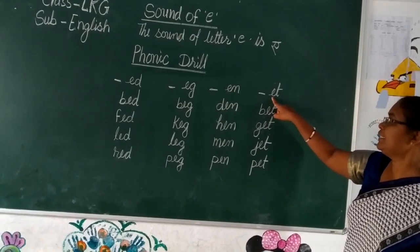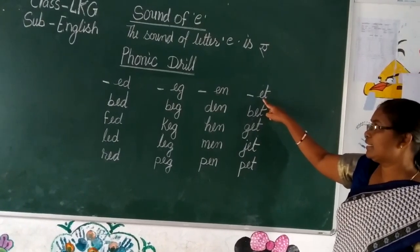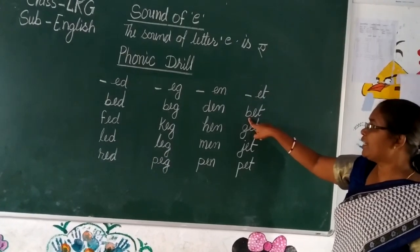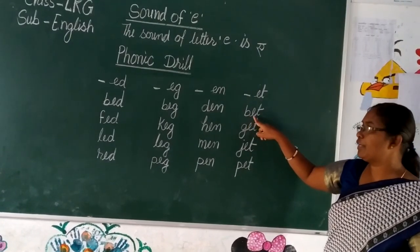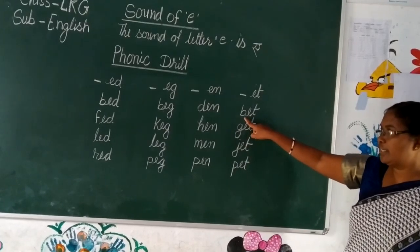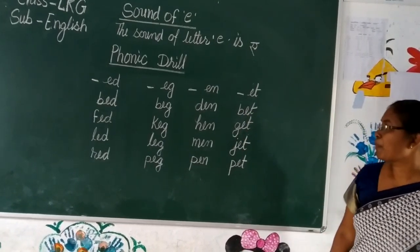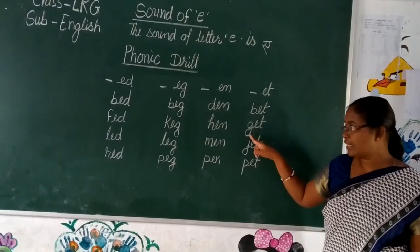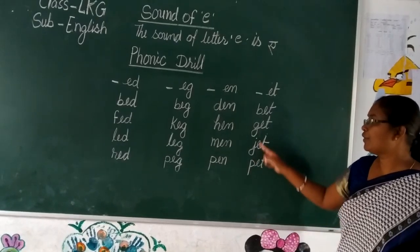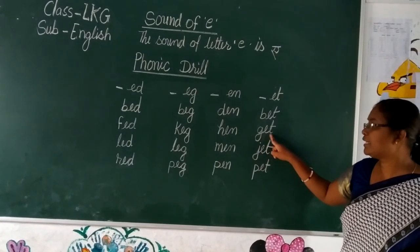Letters ET. Phonic sound is 'yet'. We added letter B before ET — the phonics sound is 'b', 'et', 'bet'. We added letter G before ET — the phonics sound is 'g', 'et', 'get'.